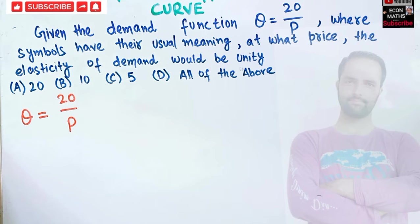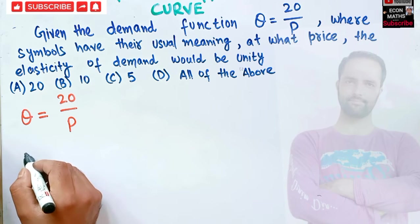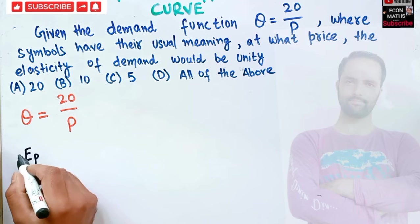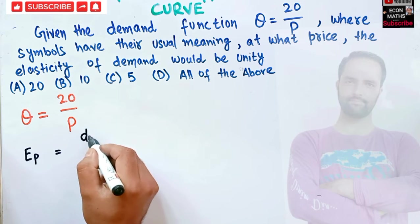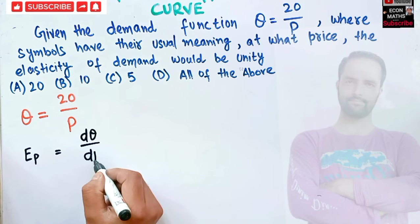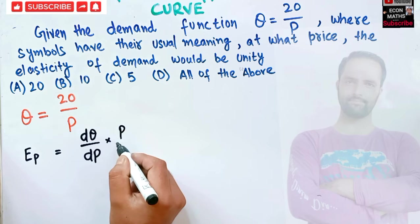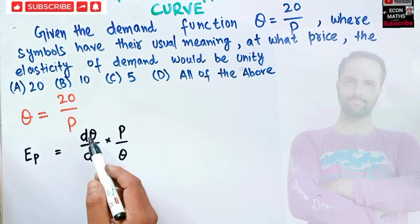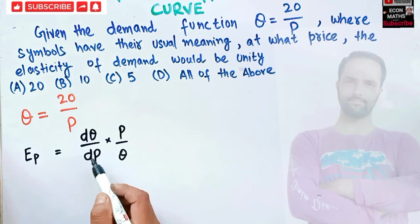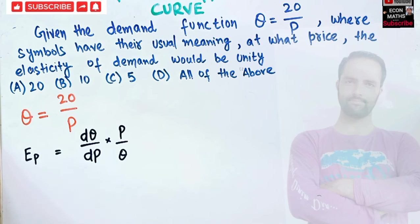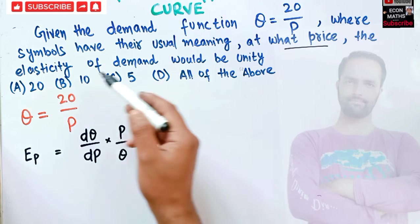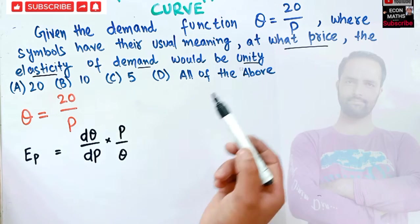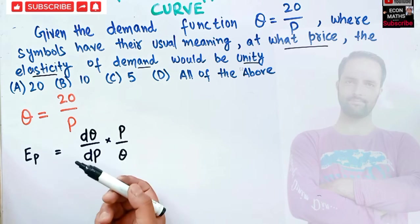The formula for elasticity of demand is: elasticity of demand equals dQ upon dP multiplied by P upon Q. This means the change in quantity demanded with respect to change in price, times the original price divided by the original quantity. We set this expression equal to one, since we want the elasticity to be unity.